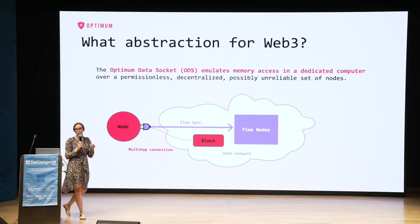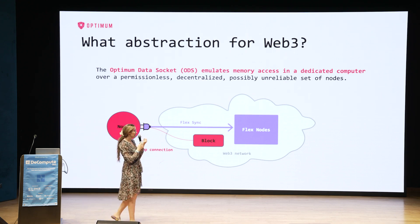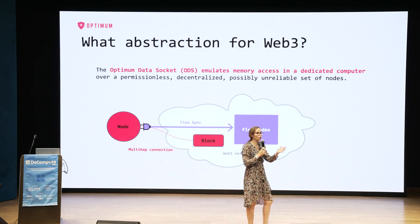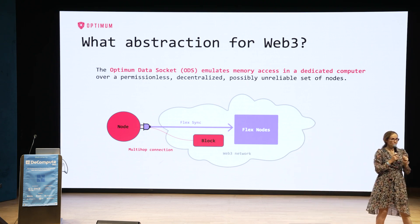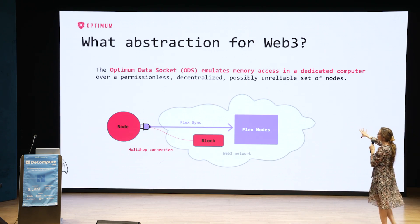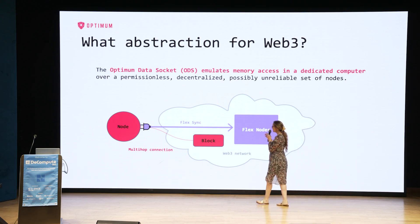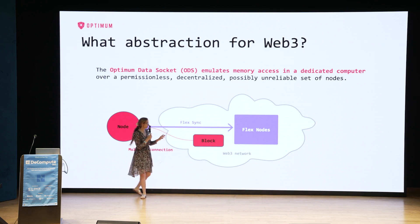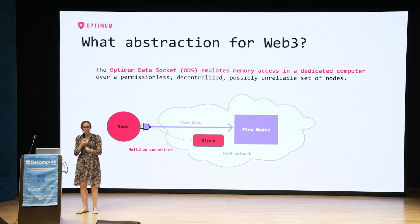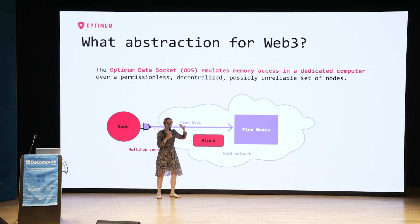So do we have that in Web3 right now? We don't really. We don't have that abstraction. It wouldn't be great if Web3 just looked to me like a computer — if I didn't have to worry about it being Web3 versus how we learn to program on our own computers. So what does our abstraction do? The Optimum data socket is going to emulate memory access on a dedicated machine. What this means is that I have a node accessing a variable or a block, and as far as it's concerned for the read/writes, it's the same thing as if it had its own RAM connected by its own bus.